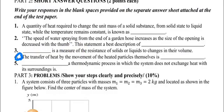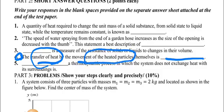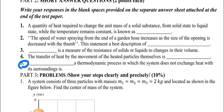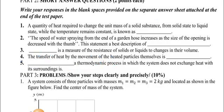Question four: the transfer of heat by the movement of the heated particles themselves is blank. If the transfer is due to the movement of the heated particles themselves, it is known as convection. Question five: a thermodynamic process in which the system doesn't exchange heat with its surroundings is known as an adiabatic process.